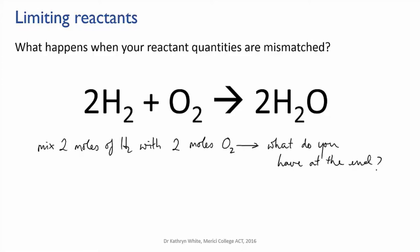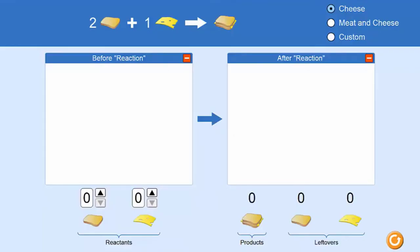You may be able to work this out, but let me give you another analogy. I'm going to use this nice simulation from PhET at the University of Colorado, which uses the analogy of making sandwiches. So here we have a reaction in which two slices of bread are combining with one slice of cheese to make one cheese sandwich.